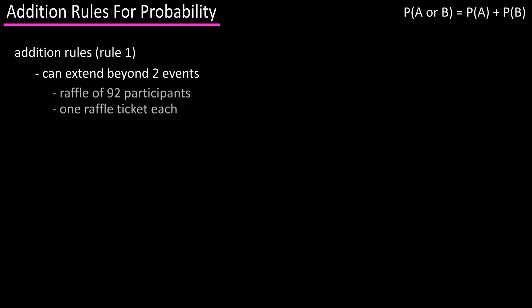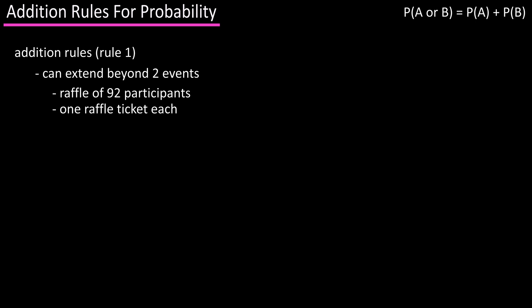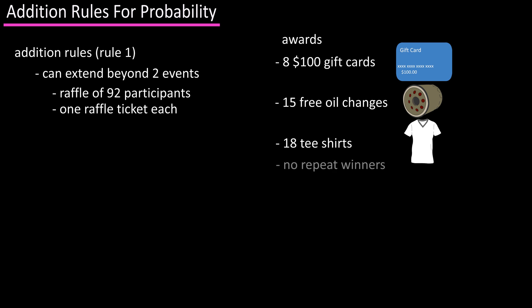This rule can extend beyond two events. Let's say you're in a raffle with a total of 92 participants who have one raffle ticket each, and there will be 8 $100 gift cards awarded, 15 free oil changes awarded, and 18 t-shirts awarded, with no repeat winners.